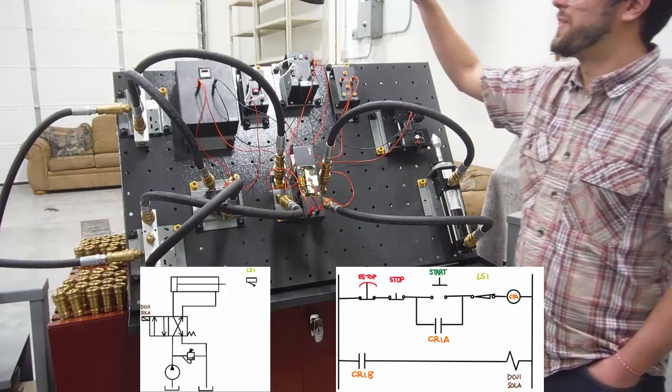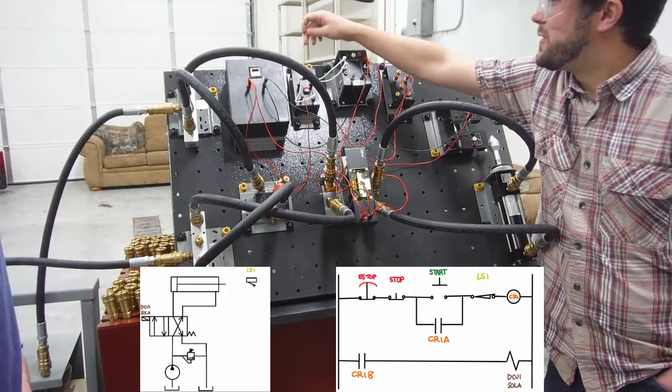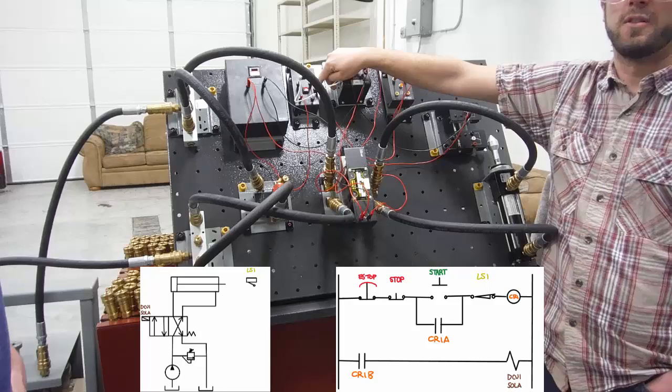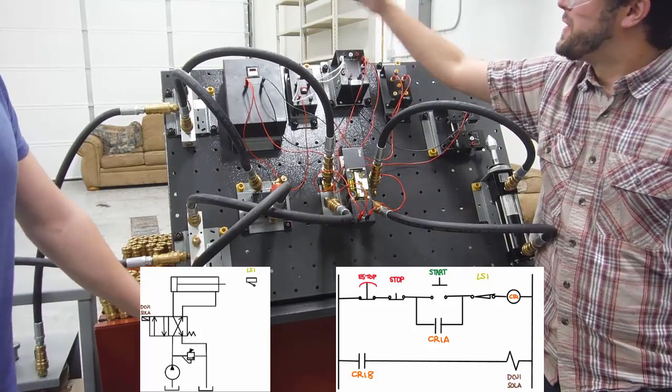I've gotten ahead of myself there. So here is the power supply. This supplies power to a switch. This is the emergency stop switch, conveniently labeled in red for the 'oh my god, it's red, let's stop this' moment.